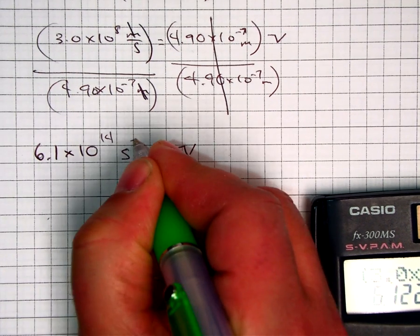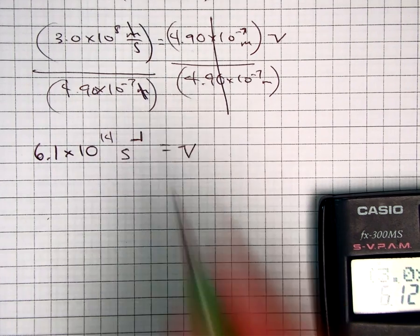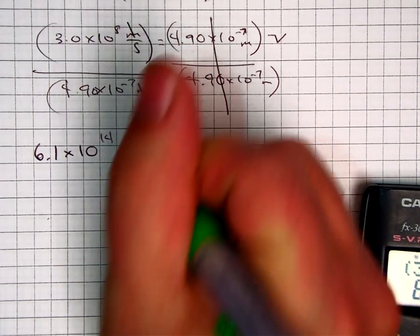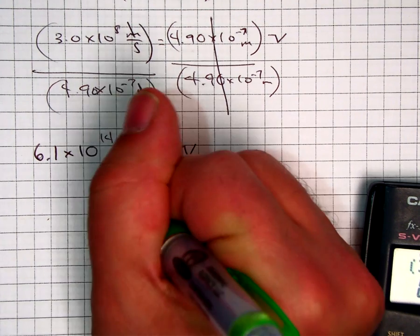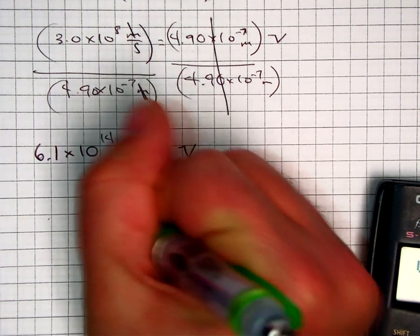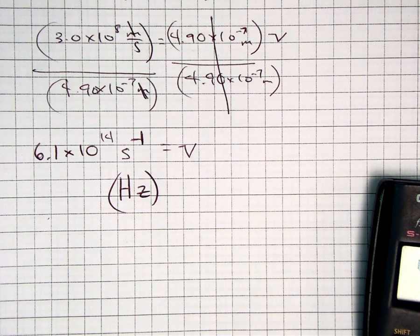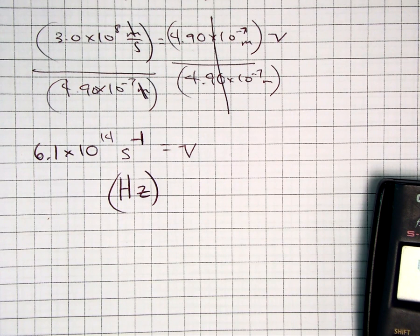So, what we have now is S on the bottom of a division line. And what it looks like as a unit is S to the minus 1. So, your answer then is 6.1 times 10 to the 14th S to the minus 1, which is also called a Hertz. HZ could be used for the frequency as well. So, I took it very slow and methodically as I went through this problem, but you saw that we had to get the variable by itself in order to solve.